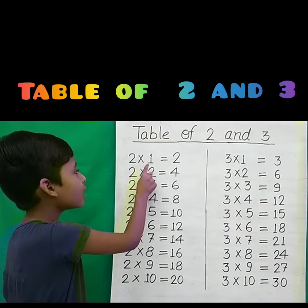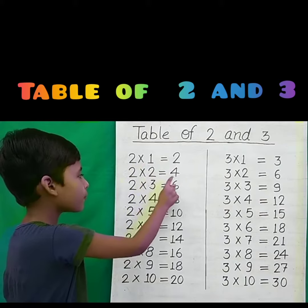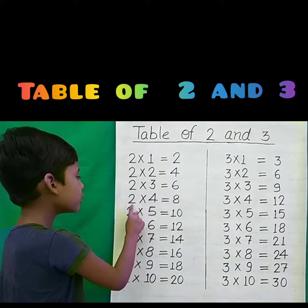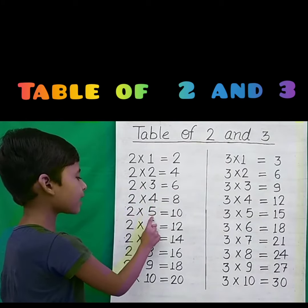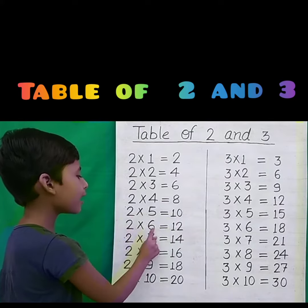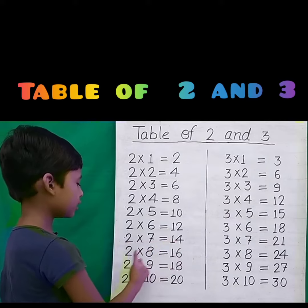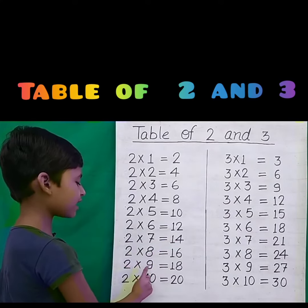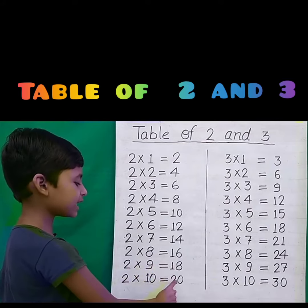2 1s are 2, 2 2s are 4, 2 3s are 6, 2 4s are 8, 2 5s are 10, 2 6s are 12, 2 7s are 14, 2 8s are 16, 2 9s are 18, 2 10s are 20.